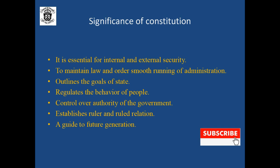The other significance of the constitution is to have control over the authority of the government organs. We have three organs of the government: the legislature, which makes and enacts law; the executive, which implements the law; and the judiciary, which interprets the law. The legislature cannot create any kind of law outside the jurisdiction of the constitution. The executive cannot make any policy that overrules the constitution. If such a law is found, then the judiciary — in the case of India, the Supreme Court — will conduct a judicial review, and the law created against the constitution will be declared null.